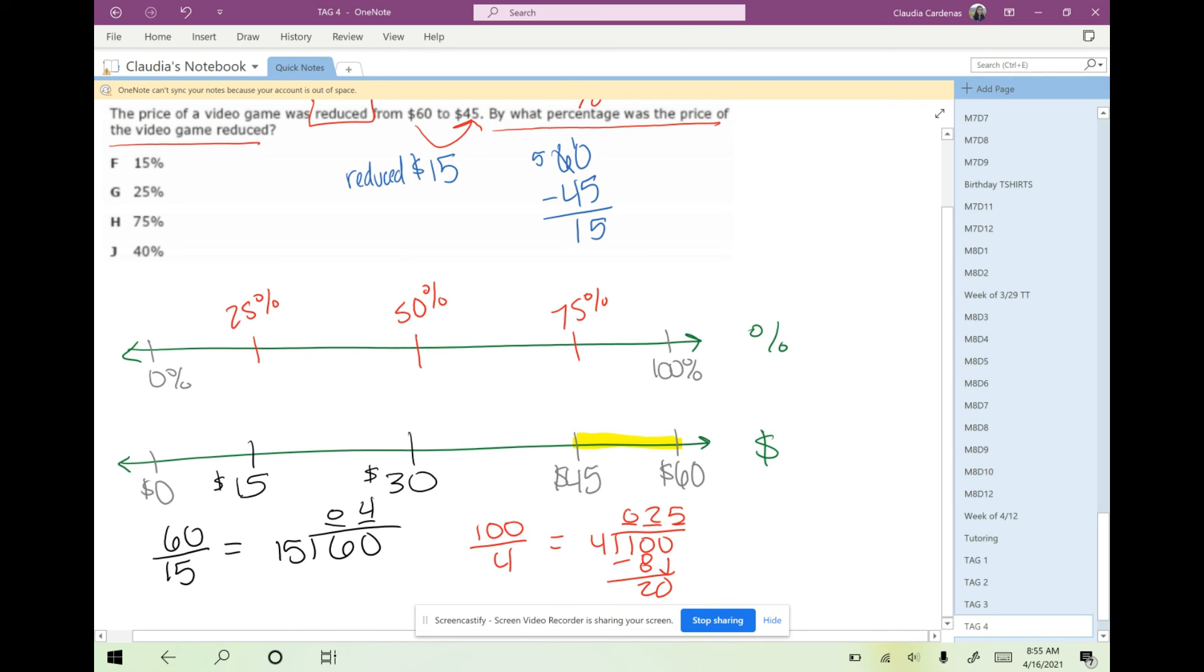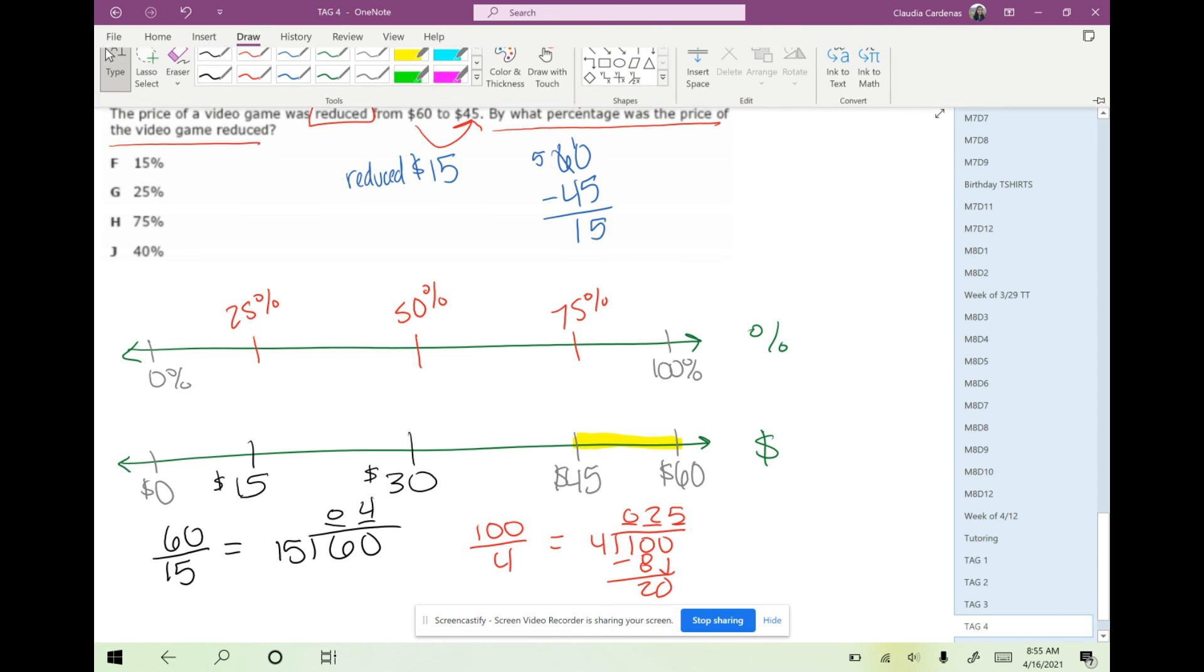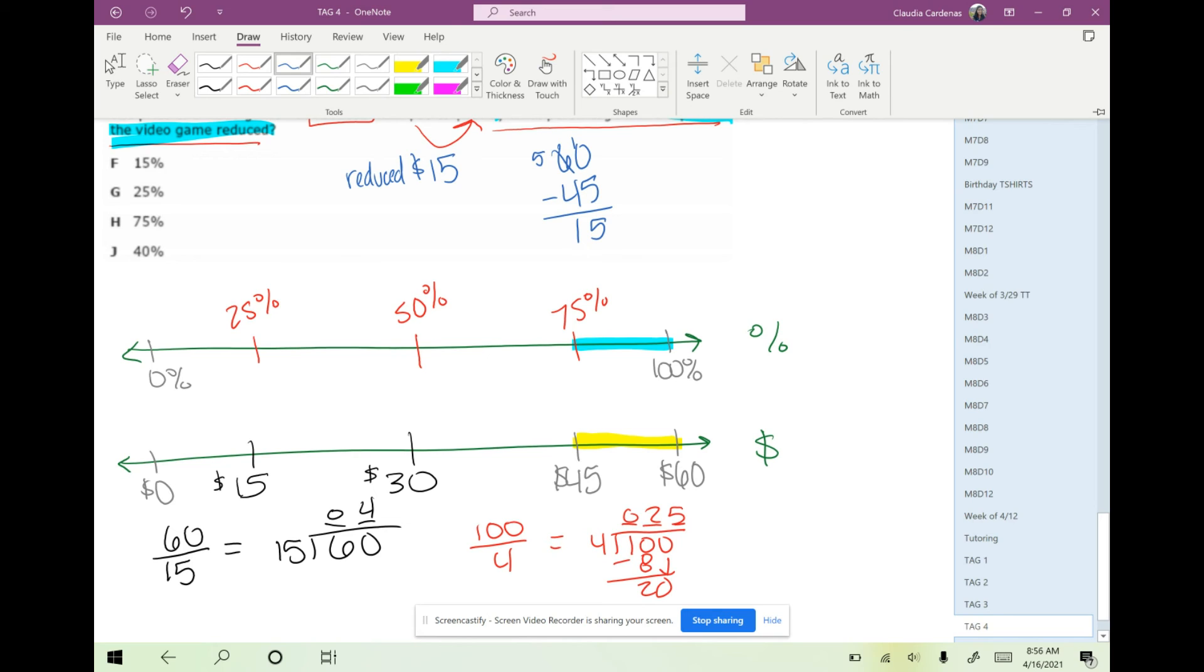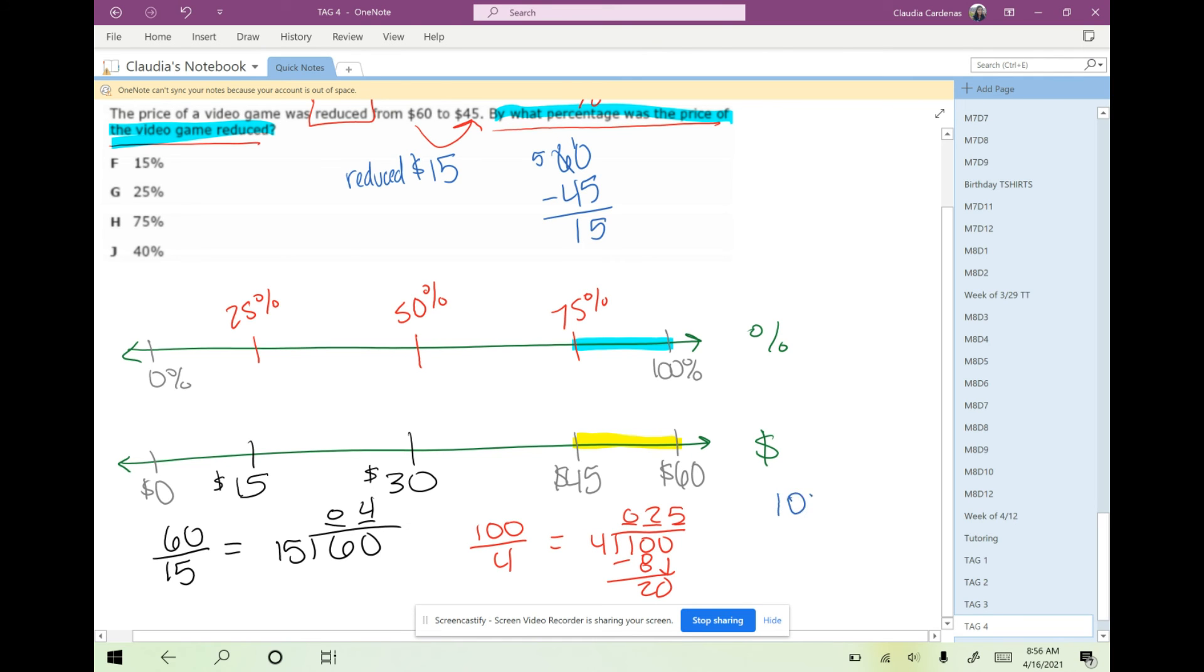However, since we are looking at the percentage that the price decreased, we want to know by what percentage did it decrease by. I see that it went from 100 to 75. So let's take away 75 from 100 and see what percentage that change decreased by, and sure enough, this is 25%, a 25% reduction. If we go ahead and look at the answer choice, I see that it's G, the answer choice right here.